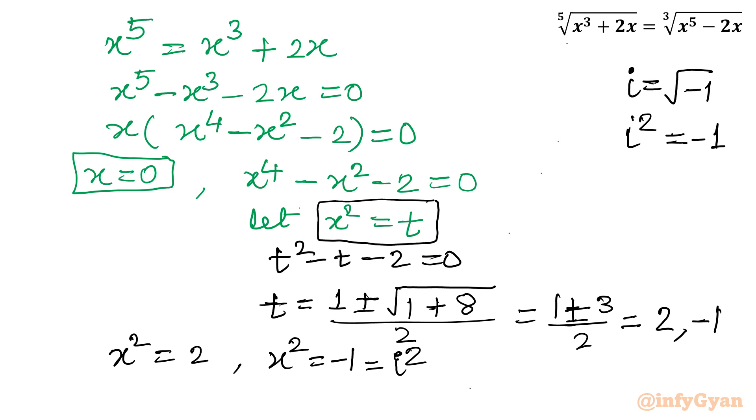So I will write x square is equal to 2, and x square is equal to negative 1. Negative 1 means we can write it is i square. As we know i is equal to square root of negative 1, or i square is equal to negative 1. Consider square root both sides. So from here we will get x is equal to plus minus square root 2, and from second equation I can write x is equal to plus minus i. But this is complex solution so we will reject this.